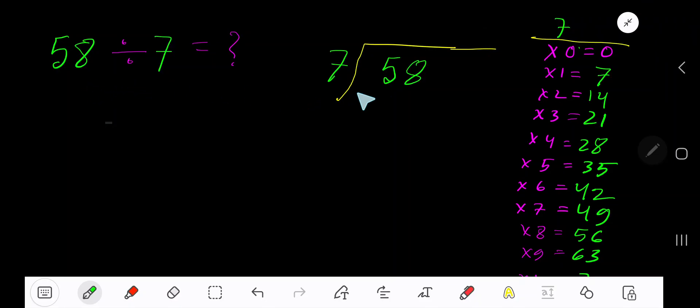58 divided by 7. Here 7 is the divisor, so we need the multiplication table of 7. 7 times 0 is 0, 7 times 1 is 7, 7 times 2 is 14, 7 times 3 is 21, 7 times 4 is 28, 7 times 5 is 35.